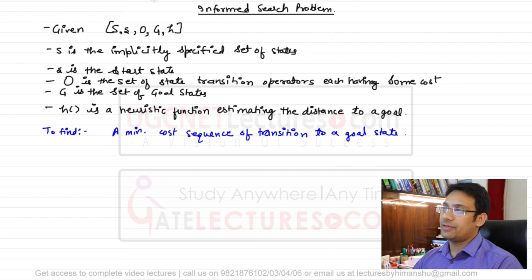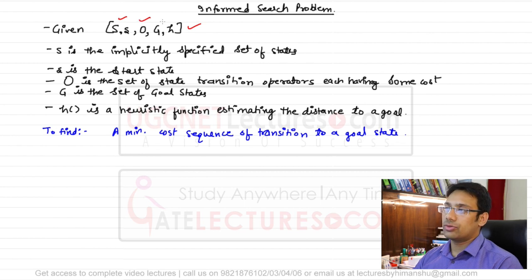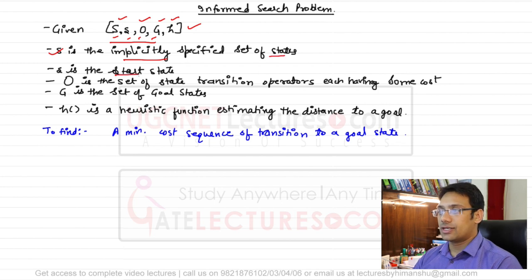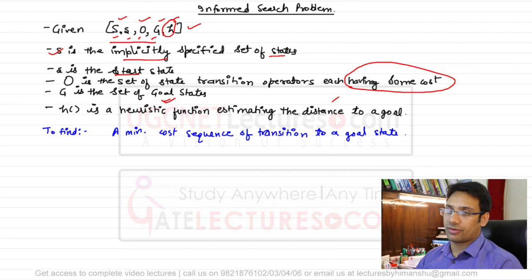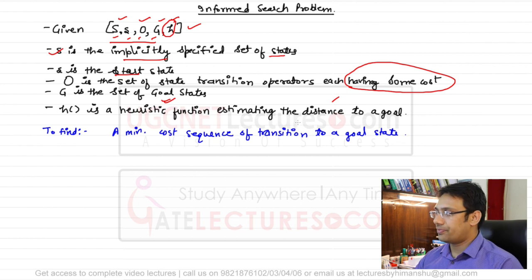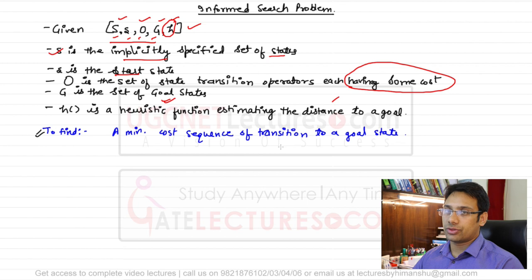In informed state space search, the problem is defined by five tuples: capital S, small s, O, G, and H. Capital S is the set of states, small s is the start state, O is the set of state transition operators with associated costs, G is the set of goal states, and H is the heuristic function — estimating the distance to the goal from a particular location. The main goal is to find the minimum cost sequence of transitions to the goal states.